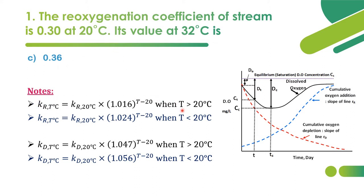This formula applies only when the given temperature is greater than 20°C. Here we have 32°C, which is greater than 20, so we use: kr(t) = kr(20) × (1.016)^(t−20). If the temperature is less than 20°C, we use the formula: kr(t) = kr(20) × (1.024)^(t−20).